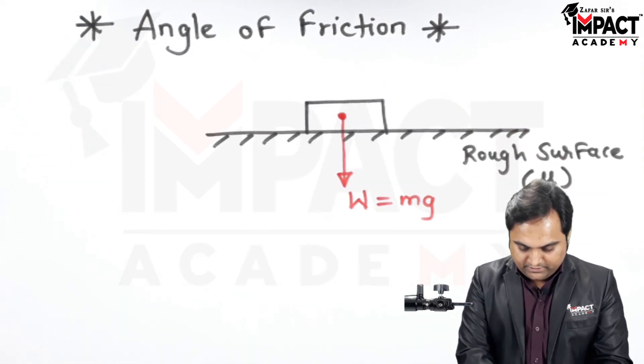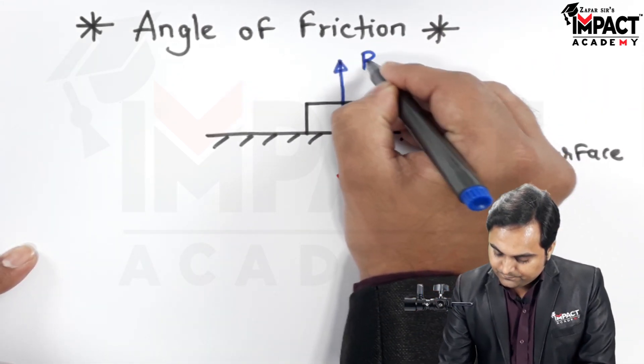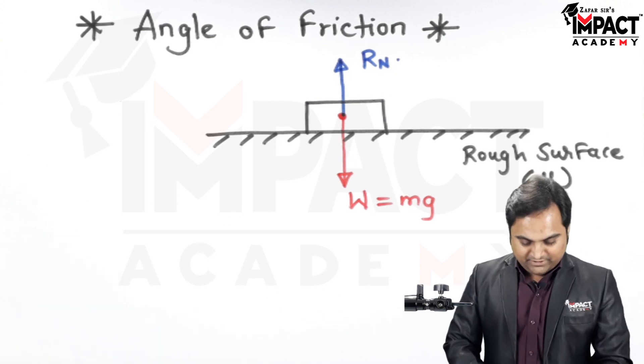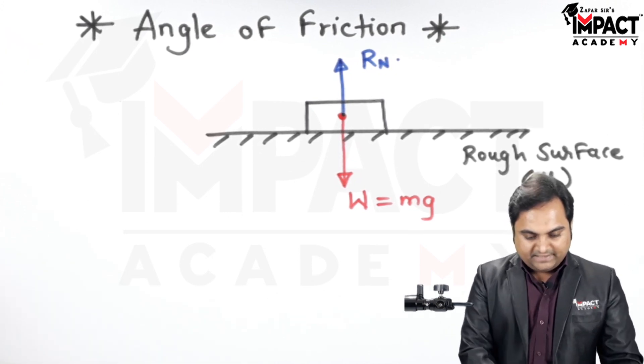Opposite to this weight and of the same magnitude there will be a normal reaction which is offered by the floor. Then here we are applying a pull which would be acting towards right.